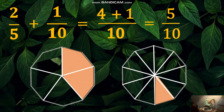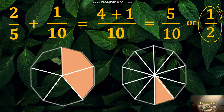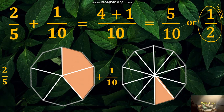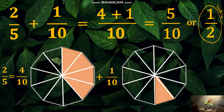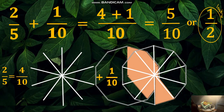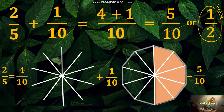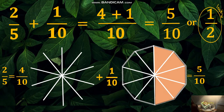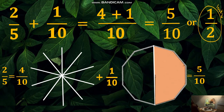We got an answer of five tenths. Changing it to the lowest term equals one half. To visualize it: changing two fifths to a similar fraction by adding partitions to make ten equal parts gives four tenths, and one tenth remains as one tenth. Adding four tenths to one tenth through the diagram shows five tenths. To change to lowest term, remove the partitions and it shows one half.